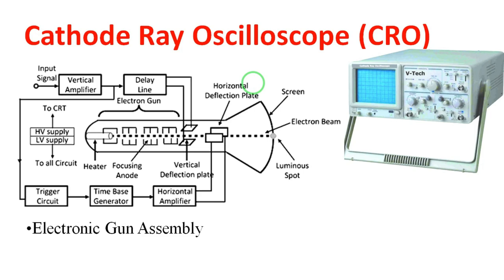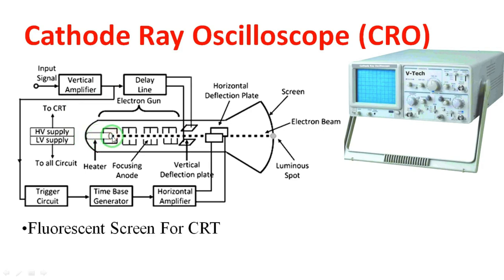Now coming to the electron gun. The first part of the electronic gun: next is the heater, then the control grid, then the anodes — the focusing anode or pre-accelerating anode — two parts. This is the complete electronic gun. This is the beam that the system produces. When the high voltage supply is connected to the CRT heater, it generates an electron signal.